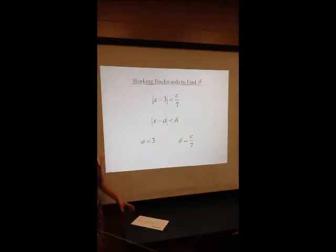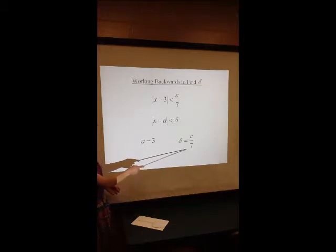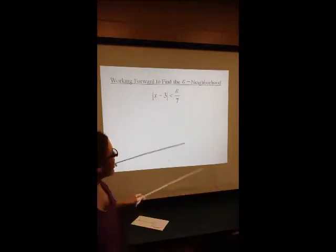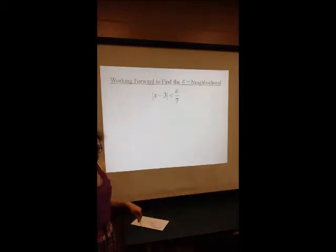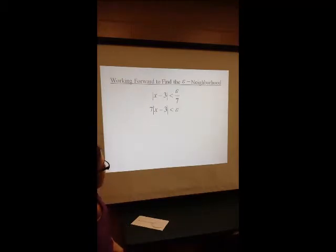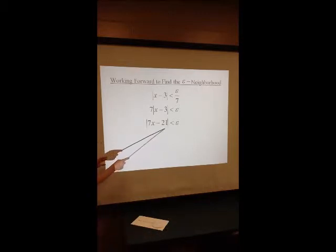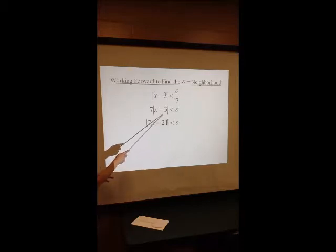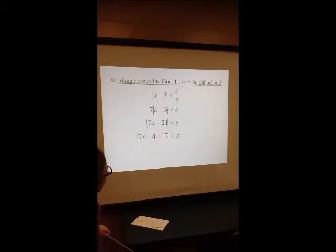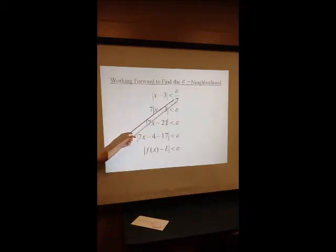We can relate this to our delta-neighborhood of A, where A equals 3 and delta equals epsilon over 7. So now we want to prove that when delta equals epsilon over 7, this delta-neighborhood of 3 will map into an epsilon-neighborhood of L. We work forwards from our delta-neighborhood of A to find our epsilon-neighborhood. We multiply both sides by 7, distribute the 7, and we need the expression within the absolute value sign to equal f of x minus L. We separate 21 into 4 and 17, giving us our original epsilon-neighborhood of L. This proves that when delta equals epsilon over 7, the delta-neighborhood of 3 maps perfectly into an epsilon-neighborhood of L.